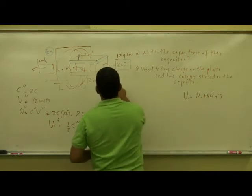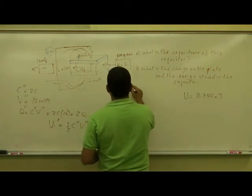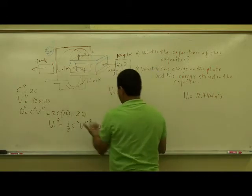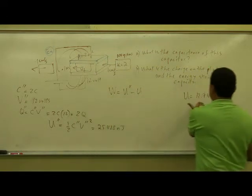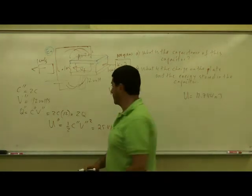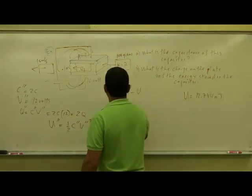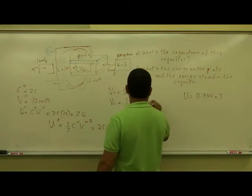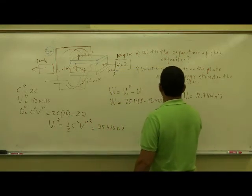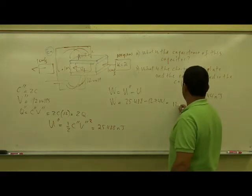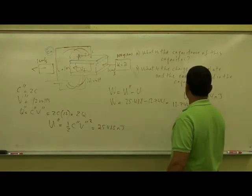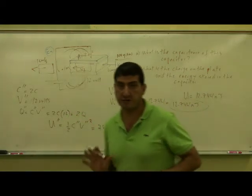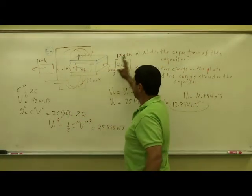So the work is equal to U double prime minus U. What was the total energy after I put it in minus the energy that it had when there was just vacuum there? So the work is equal to 25.488 minus 12.744, which is, since this is double that, it's just equal to 12.744 nanojoules. So I'm going to have to do 12.744 nanojoules of work to keep it going at constant velocity.